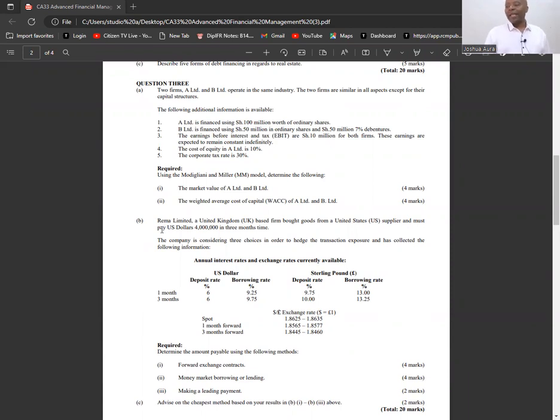We are told Rema Limited, a United Kingdom-based firm, so they have defined the residence. This particular company is based in the UK, so UK is the home country. The firm bought goods from a United States supplier and must pay US dollars 4 million in three months' time.